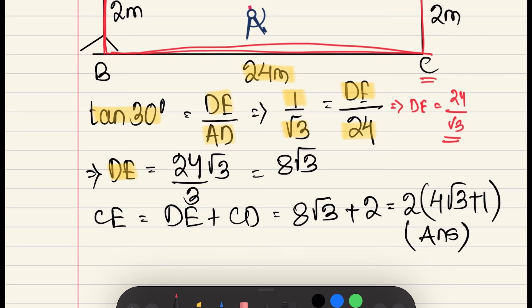DE is equal to 24 divided by root 3. If root 3 is in the denominator, it is an irrational number. So, both sides are multiplied by root 3. Root 3 into root 3 is equal to 3.